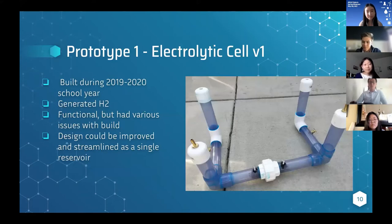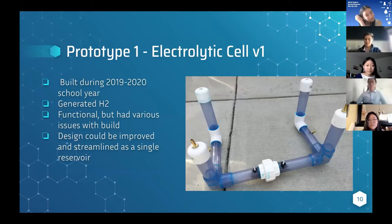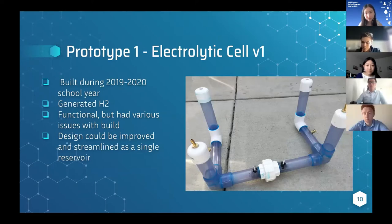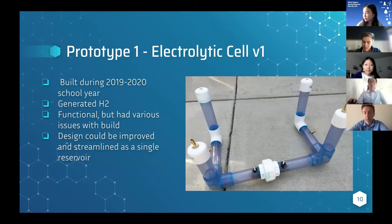This is the original electrolytic cell prototype built during the 2019-2020 school year. Linking it with other components was halted due to COVID. It was a functional prototype — it did indeed split water into hydrogen and oxygen. The two screws in the middle served as the anode and cathode connected to steel wool, which utilized a proton exchange membrane to generate hydrogen and oxygen. However, it had various build issues and we believe the design could be improved and streamlined as a single reservoir.